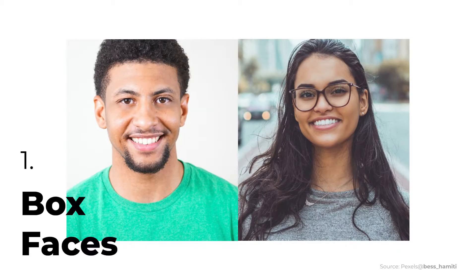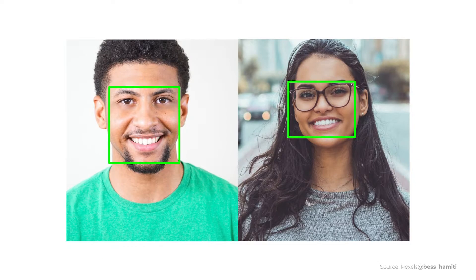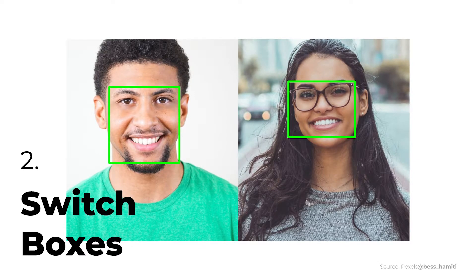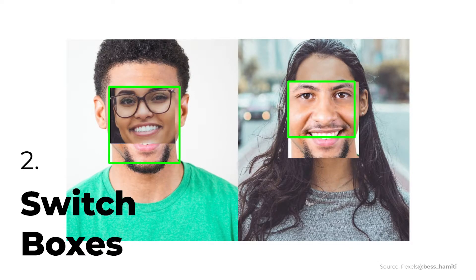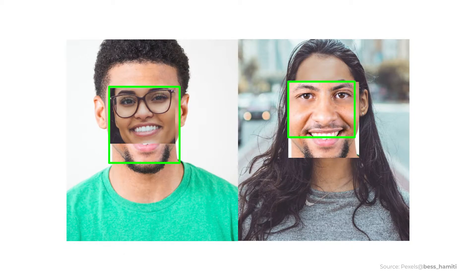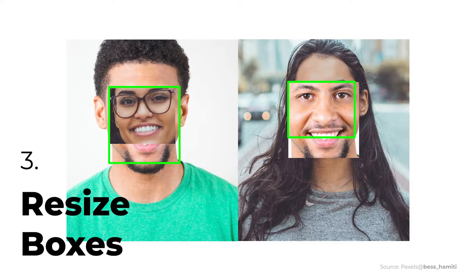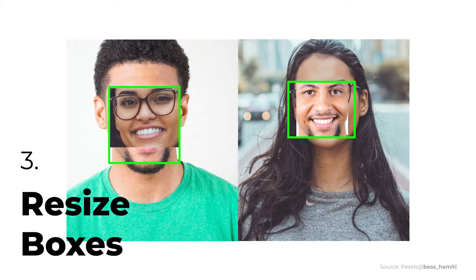In the basic version, detect faces by drawing boxes around each face for your first step. Second, switch boxes like this. However, notice the boxes don't match in size. To address that, resize both boxes to match the original — and there you have it, a basic face swap.